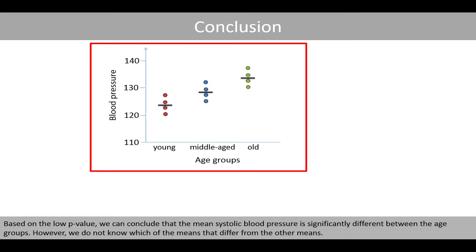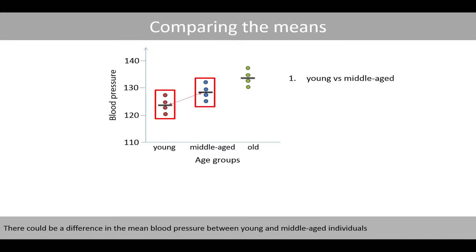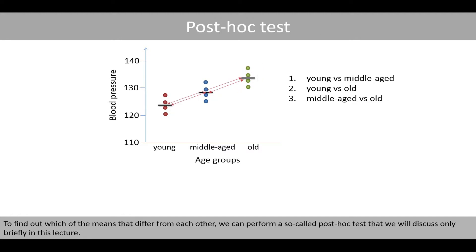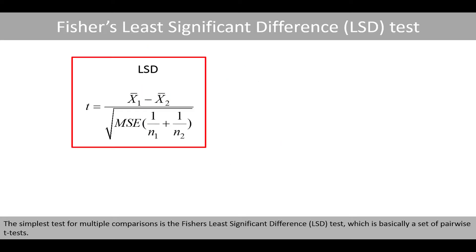However, we do not know which of the means differ from the other means. There could be a difference in the mean blood pressure between young and middle-aged individuals, between young and old individuals, or between middle-aged and old individuals. To find out which means differ from each other, we can perform a so-called post-hoc test. The simplest test for multiple comparisons is Fisher's Least Significance Difference test, or the LSD test, which is basically a set of pairwise t-tests. Note that Fisher's test should be performed only if you reject the null hypothesis from your ANOVA, and if you have few groups.